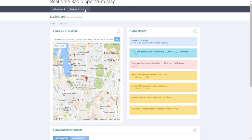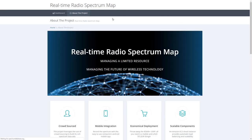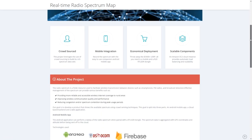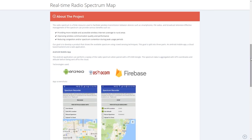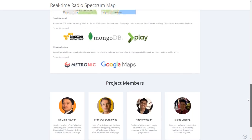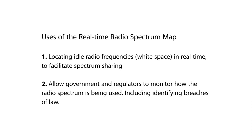On the website, we also have an about page, which gives some background information on the project, some of the technologies used, and the members involved. To sum up, the real-time radio spectrum map has a variety of uses, such as locating idle radio frequencies in real time to facilitate spectrum sharing, and secondly, allowing the government or regulators to monitor how the radio spectrum is being used. This could help identify potential breaches of law, such as transmission over restricted frequencies.